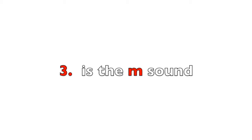Digit 3 is the M sound. There are three downstrokes to make the M. Also, if you look at the digit 3 and push it over to its left, when it falls down it makes a lowercase M.